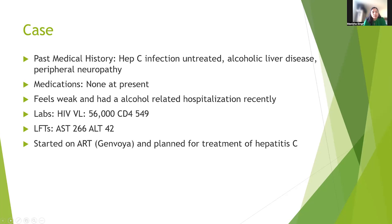Her chief complaint was that she felt generally weak and had had an alcohol-related hospitalization recently. Her labs were abnormal in terms of a high viral load, and her liver function tests, including AST and ALT, were also elevated. We planned to start her on antiretroviral therapy and also planned to treat her for hepatitis C.